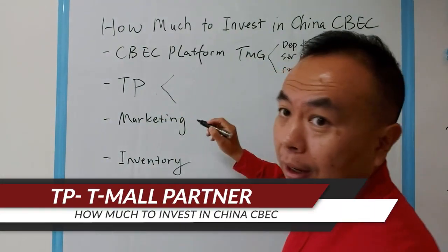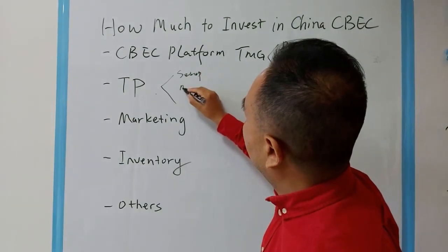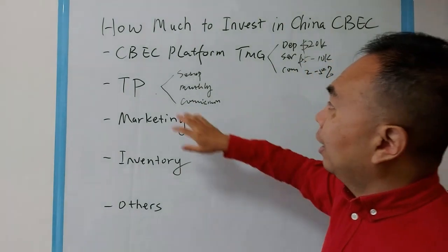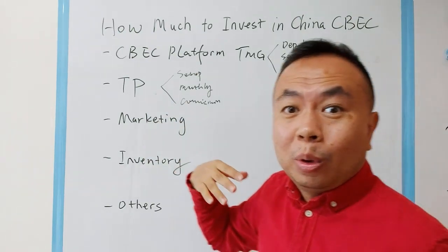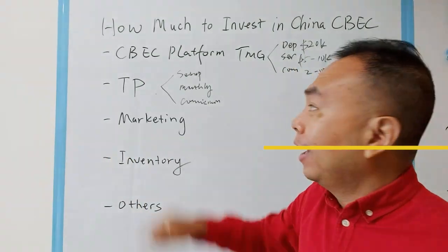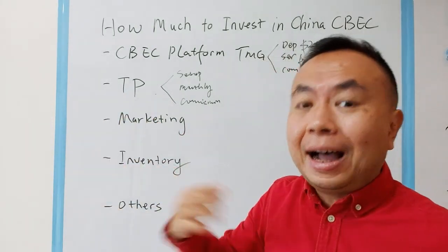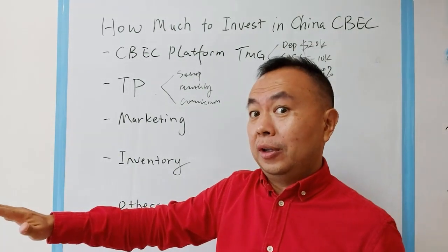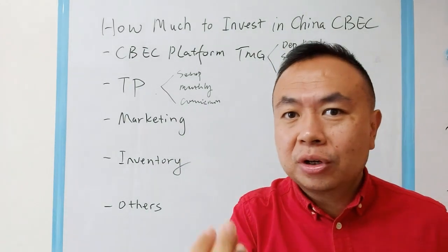The second part is TP. TP's business model includes a setup fee, a monthly fee, and a commission. By the way, what is TP? You can watch my previous video — I'll share the link below. TP means Tmall Partner. It is an outsourced e-commerce service provider that helps you handle all operational tasks so you can focus on core business such as product R&D, product design, manufacturing, and supply chain.